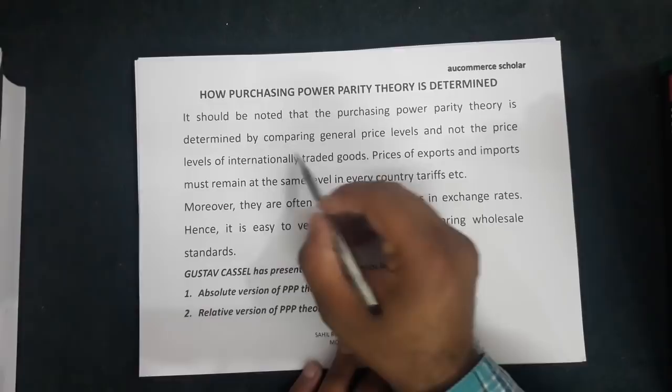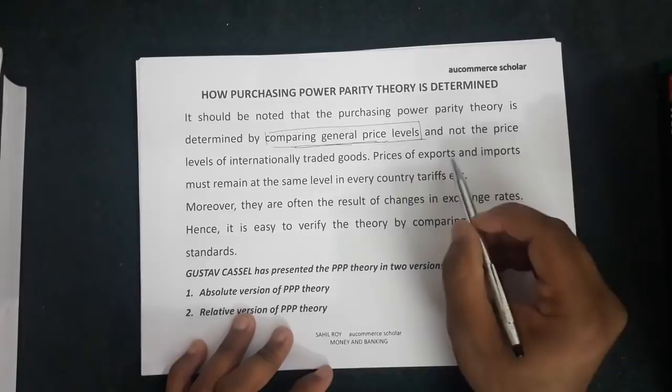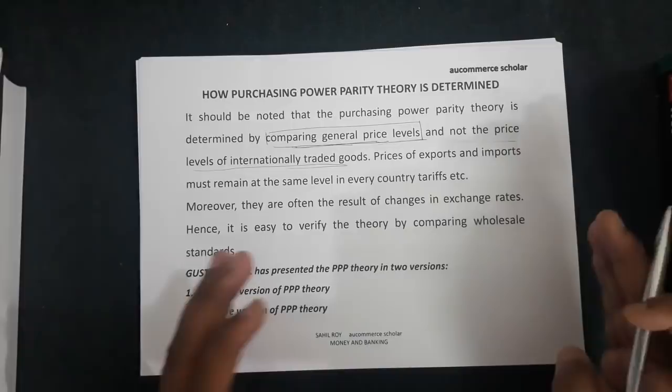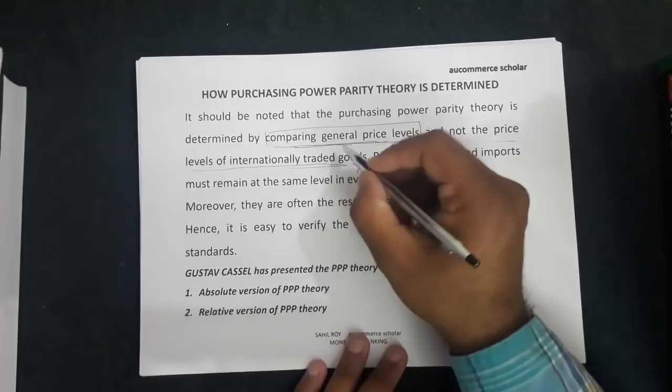Purchasing power parity is determined by comparing general price levels of goods and services — and not the price levels of internationally traded goods. The basis of determining purchasing power parity theory is comparing general price levels.